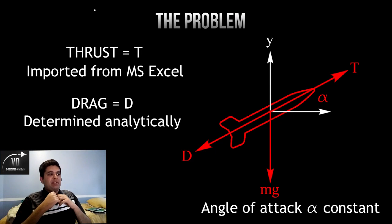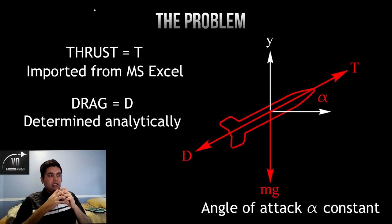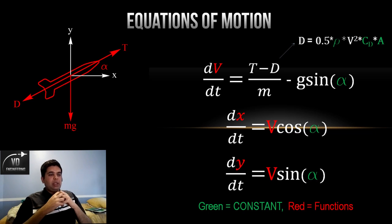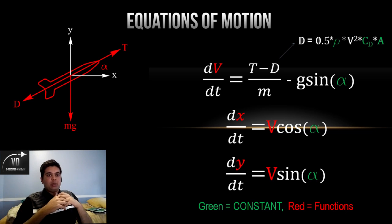For this problem I have projectile motion. As you can see on the screen, we have a rocket moving in the atmosphere. The force from the engine will be imported from Excel, the drag force can be given there, as well as the angle of attack — that value will be fixed. The parameters will be your engine force, your drag, your velocity, and your displacements in X and Y, and we will be solving for velocity as well as displacements in X and Y. The equations are DV/DT, DX/DT, and DY/DT, corresponding to velocity, X, and Y.